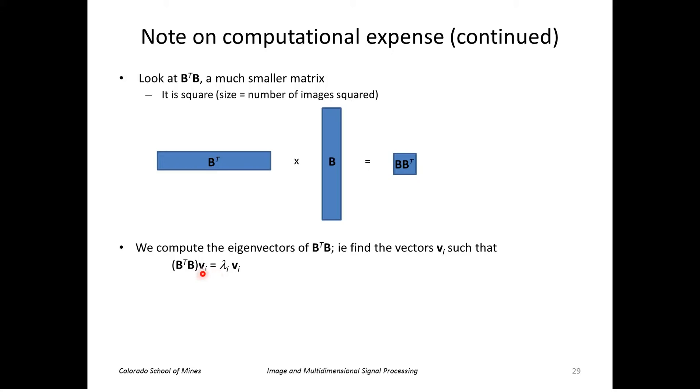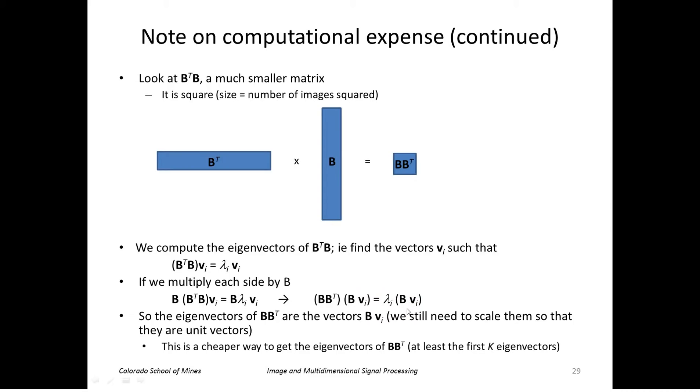Let's say we do that, so we find eigenvectors V and eigenvalues lambda. But if we were to multiply each side of this by B and group the matrices, you can see that we have this vector BV on each side. So I have a matrix times a vector is equal to a scalar times that same vector. So that's exactly an eigenvector. So what we're saying then is that the eigenvectors of B B transpose are just these guys here, this B times V. Of course we still need to scale them so that they're unit vectors.